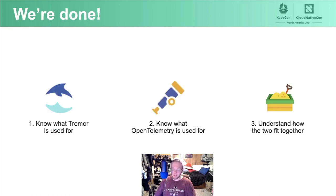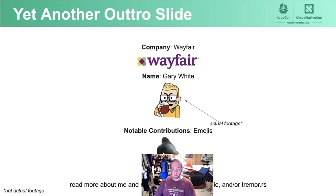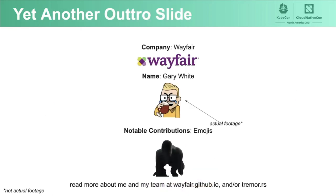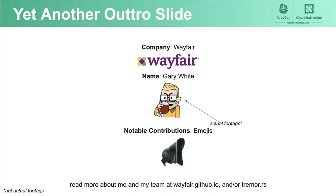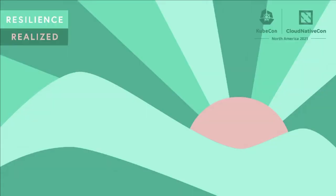That's it. That's how Tremor and OpenTelemetry work together. I really appreciate you taking the time to listen, here late on a Wednesday at KubeCon. I'm Gary White — I work for Wayfair with the Open Source Program Office. You can learn more about us and our work at wayfair.github.io. If you're interested in Tremor and would like to get involved, you can check out tremor.rs — we'd be happy to have you. If you have any questions, don't hesitate to use the Q&A or reach out to me after the fact at gwhite@wayfair.com. Until then, enjoy the rest of KubeCon and have a great evening.